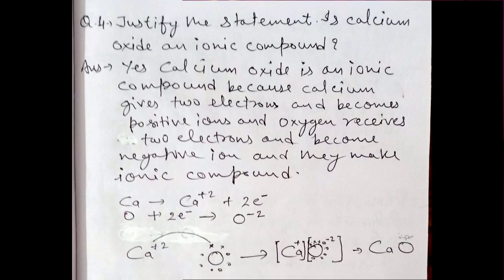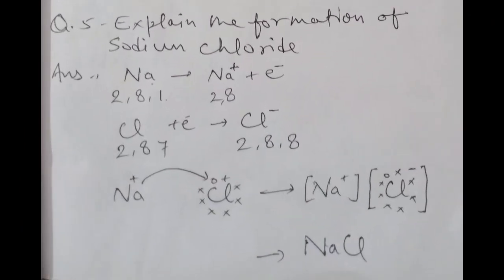Question number 5: Explain the formation of sodium chloride. Sodium mein kitne electrons hote hain — 2, 8, aur 1 — electronic configuration neeche likhi hai. Isne ek electron de diya to 2, 8 ho gaya — stable ho gaya, octet prapt kar liya. Idhar chlorine ne ek electron grant kar liya jo sodium ne diya tha. Chlorine mein 2, 8, 7 hota hai — ek electron milte hi ho gaya 2, 8, 8 — chlorine ka bhi octet ho gaya aur sodium ka bhi.